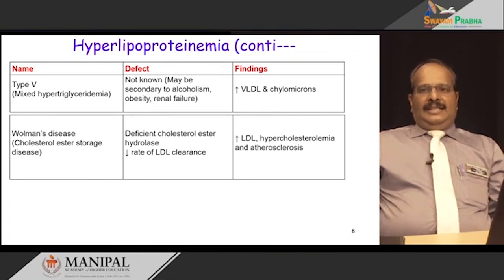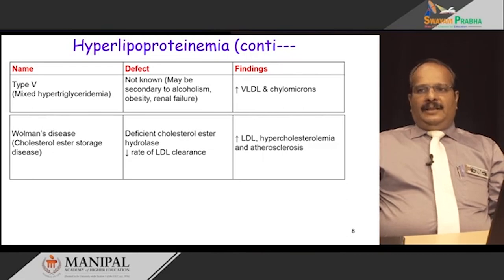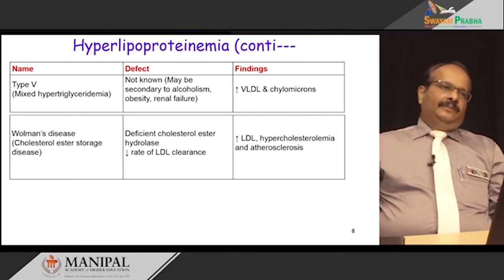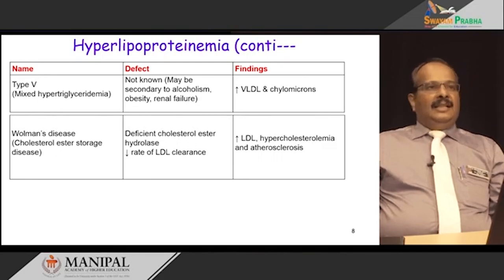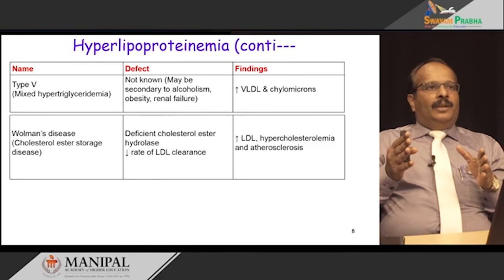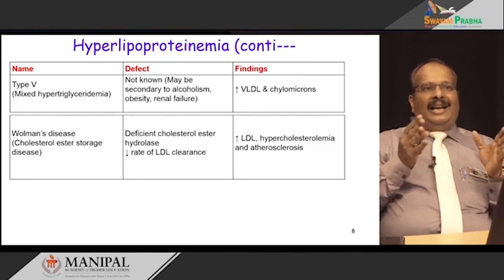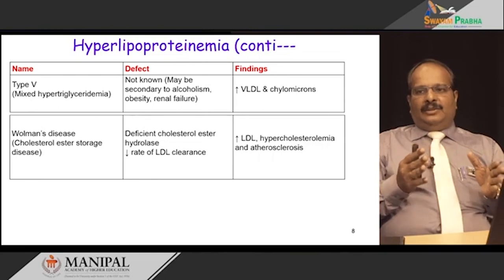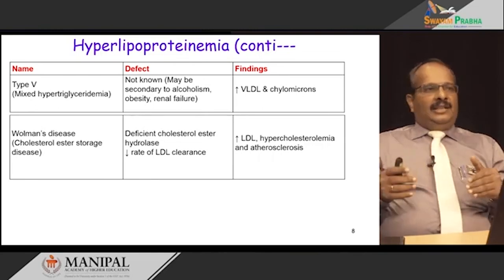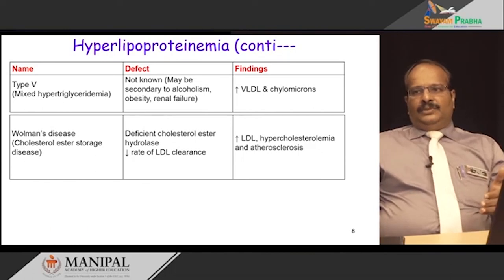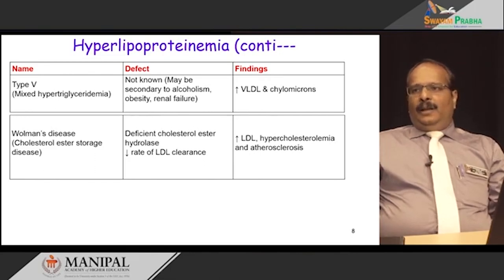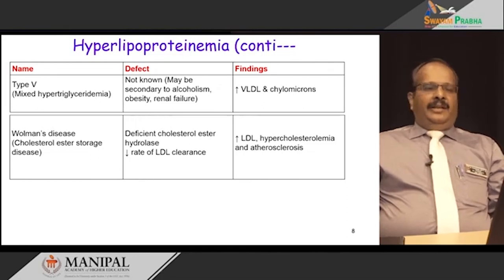The next condition is Wolman's disease, a lysosomal storage disorder of cholesterol. The deficiency here is cholesterol ester hydrolase. This enzyme normally cleaves the cholesterol ester molecule into cholesterol and free fatty acids. Without it, there is accumulation of cholesterol esters in the lysosomes. Additionally, a decreased rate of LDL clearance is a defect. Clinical findings include increased LDL, hypercholesterolemia, and atherosclerosis.